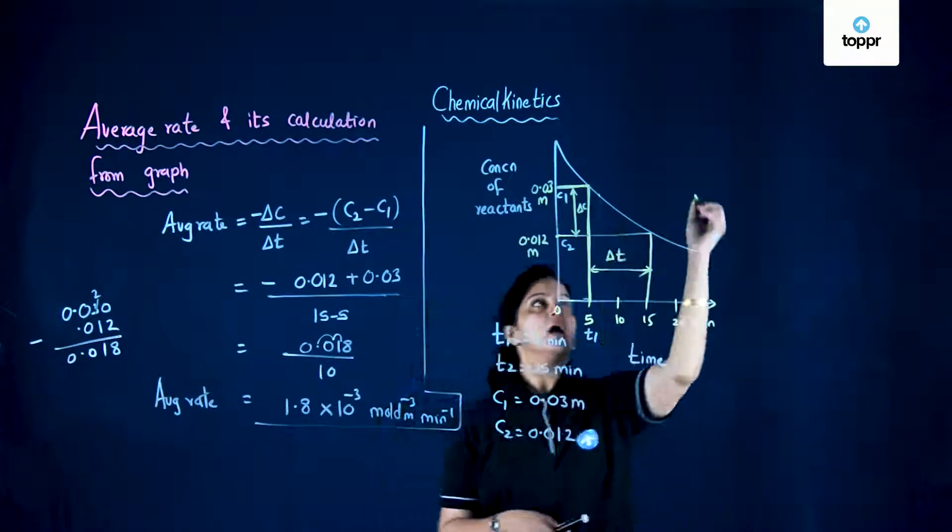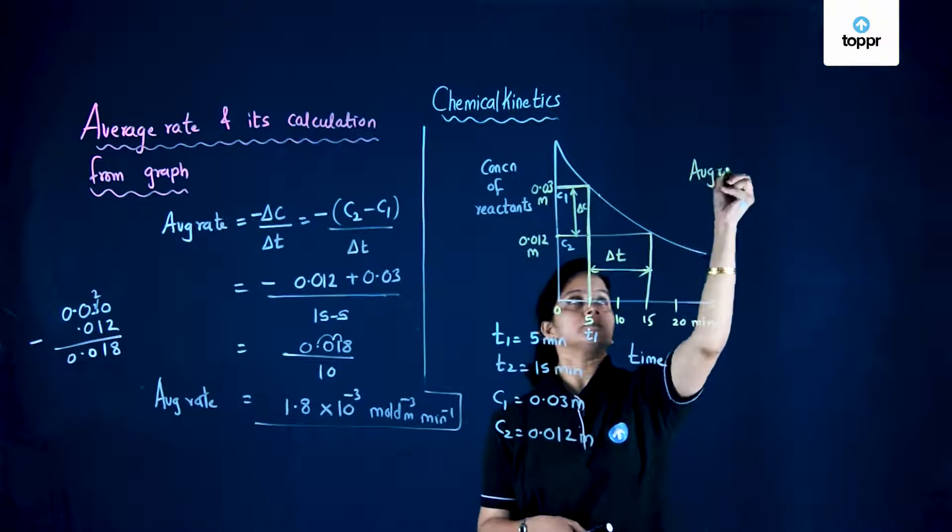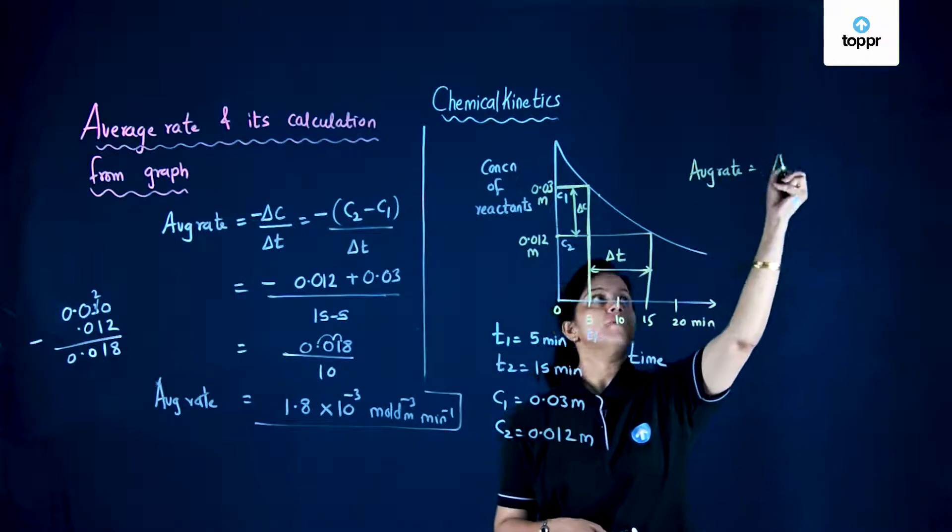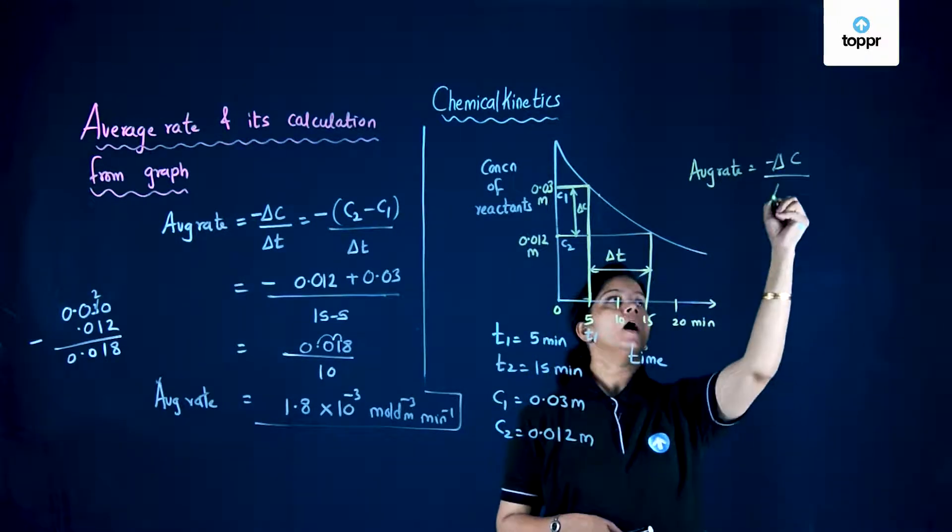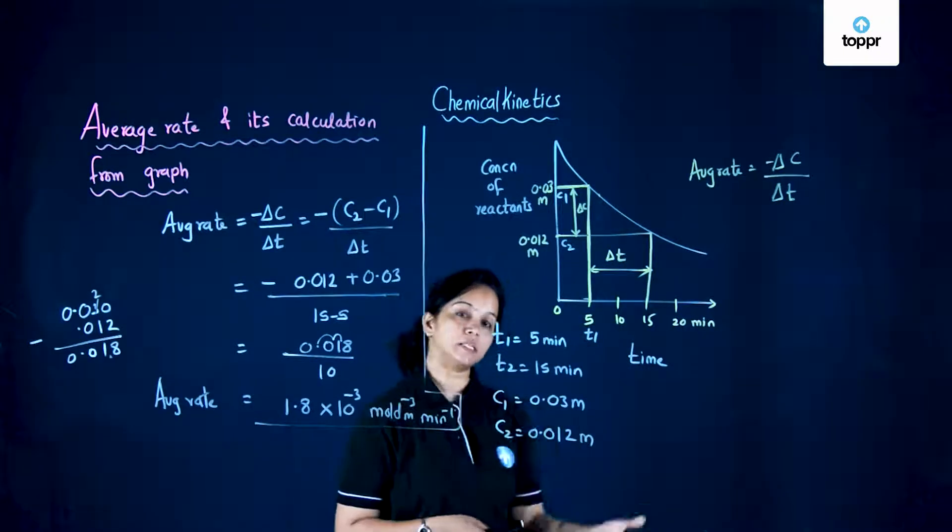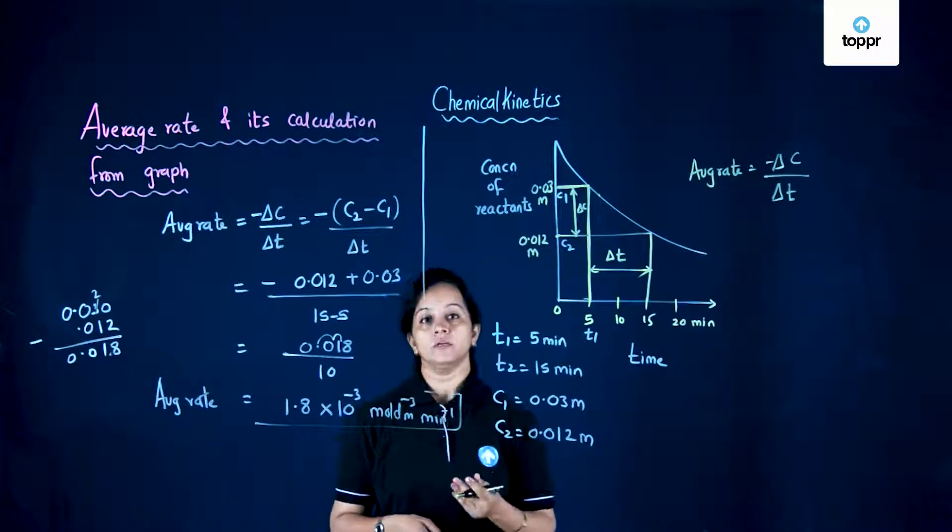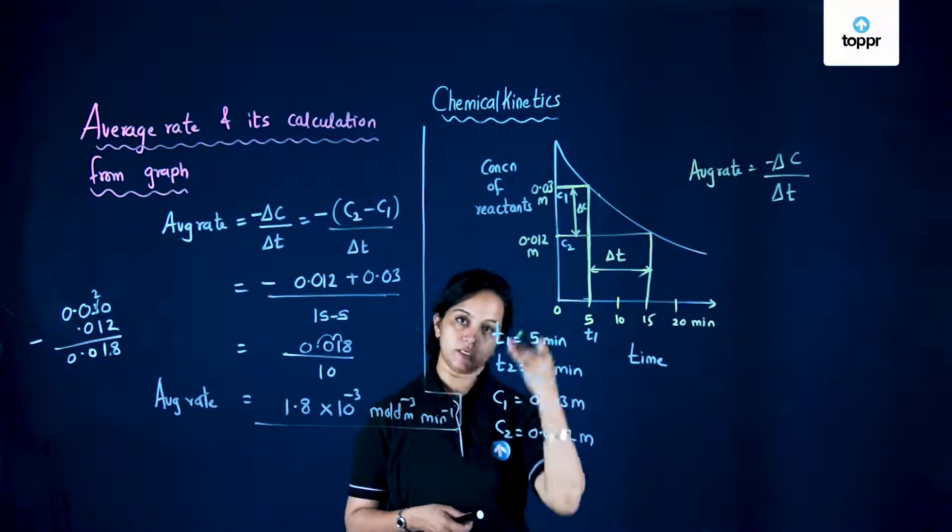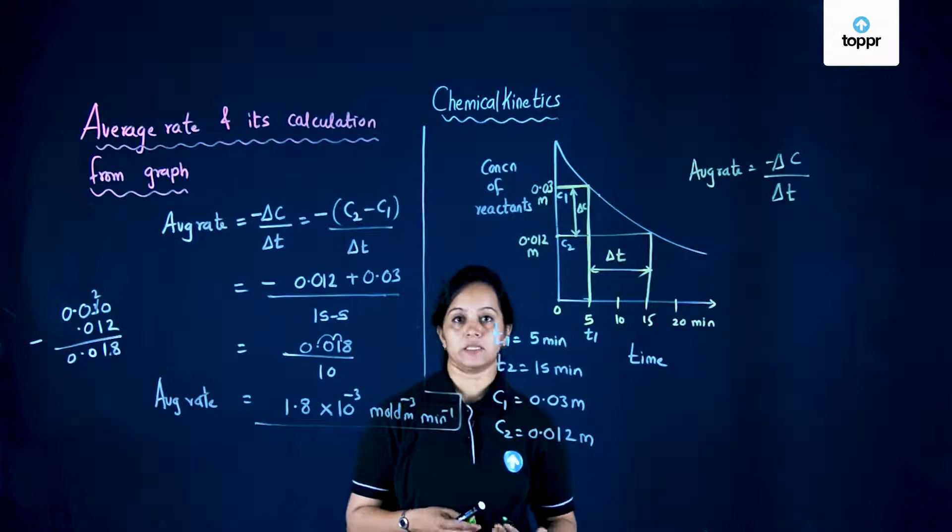This is called delta T and this is called delta C. Average rate is minus delta C upon delta T. Because this is reactant's rate, as time increases, the reactant's rate is negative because it is decreasing.